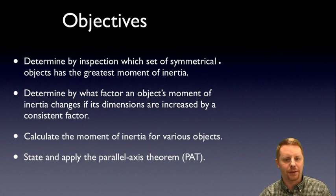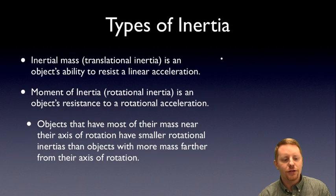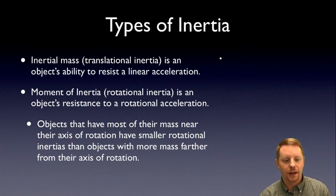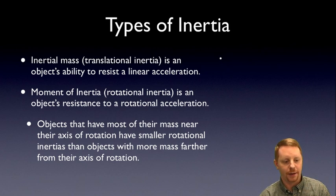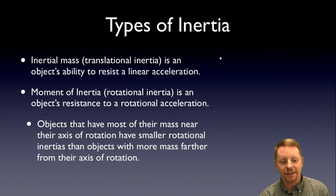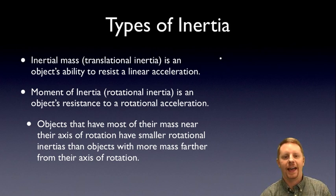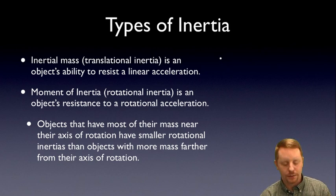To begin with, let's talk about some types of inertia. Inertial mass, or translational inertia, is what we've typically been talking about — that's an object's ability to resist a linear acceleration, and it correlates to how much stuff an object is made up of. Moment of inertia, or rotational inertia, describes an object's resistance to a rotational acceleration. Objects with most of their mass near their axis of rotation tend to have smaller moments of inertia, and objects with larger masses further from their axis of rotation tend to have larger rotational inertias.